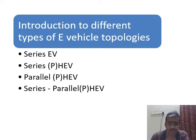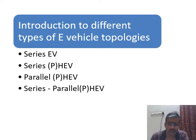For example, in series HEV, both battery and engine are connected in series configuration. Whereas in case of parallel HEV, both battery as well as engine will be connected in parallel. Whereas in case of series parallel configuration, you will have two different machines — one will be acting as motor, and the other will be acting as generator. The motor will be connected in parallel with the engine, whereas the generator will be connected in series. That is why it is called series parallel HEV.